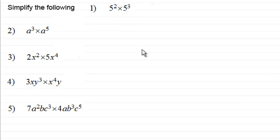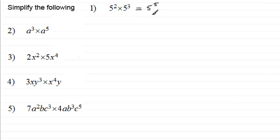For number one, what we've got here is five squared multiplied by five cubed, or five to the power three. For something like that, you should find that you get five to the power five. At the end of the video I'll explain again why we get all of these results, but for now you should be able to do them straight off.